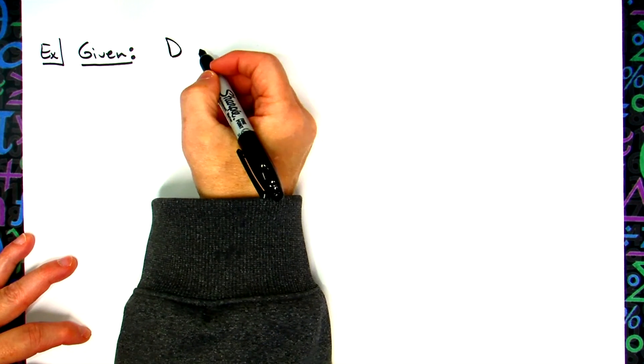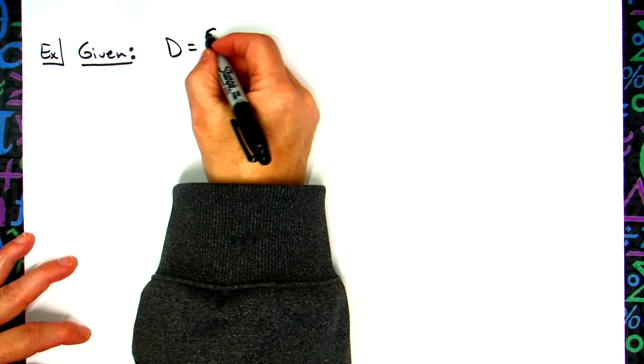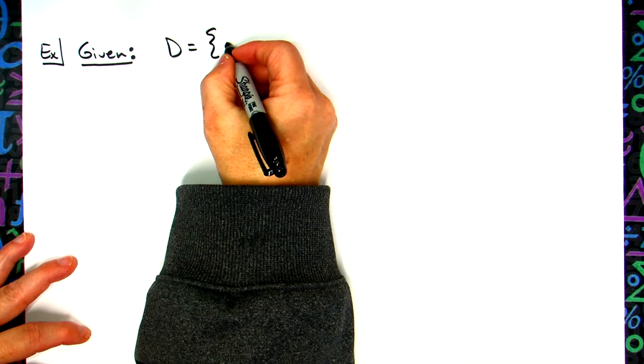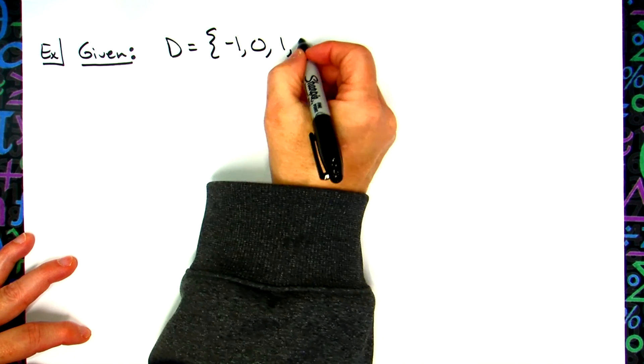Given the domain, I'm just going to use capital D. Let's say your domain is {-1, 0, 1, 2}.